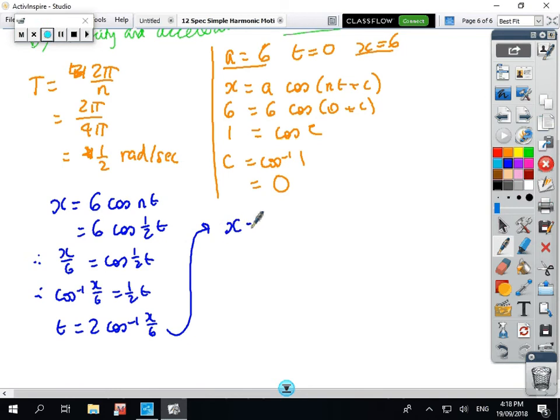So the formula for X is 6 cos(Nt), which is 6 cos(t/2). So X/6 = cos(t/2), so cos⁻¹(X/6) = t/2, t = 2 cos⁻¹(X/6). X is 3, so it's 2 times cos⁻¹(1/2), which is 2 times π/3, which is 2π/3 seconds.